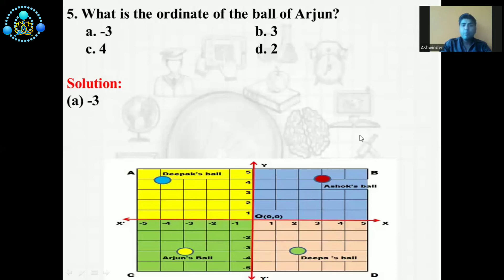What is the ordinate of the ball of Arjun? Again, we have four options. A: minus 3. B: 3. C: 4. D: 2.